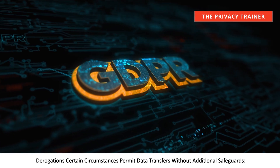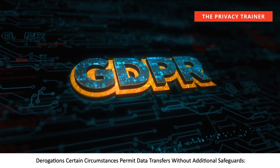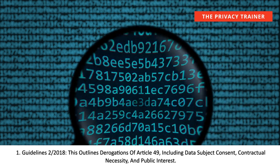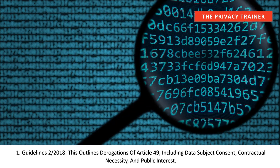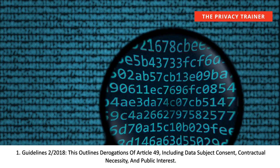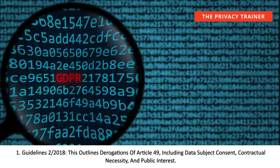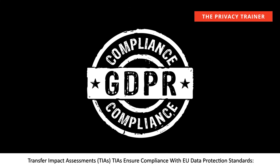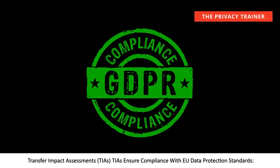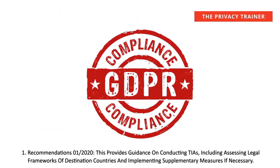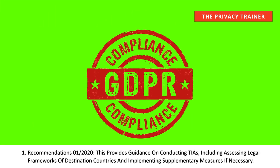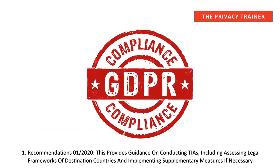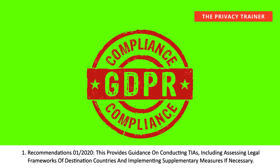Certain circumstances permit data transfers without additional safeguards through derogations. Guidelines 02-2018 outlines derogations under Article 49, including data subject consent, contractual necessity, and public interest. Transfer Impact Assessments (TIAs) ensure compliance with EU data protection standards. Recommendations 2020 provides guidance on conducting TIAs, including assessing the legal frameworks of destination countries and implementing supplementary measures if necessary.